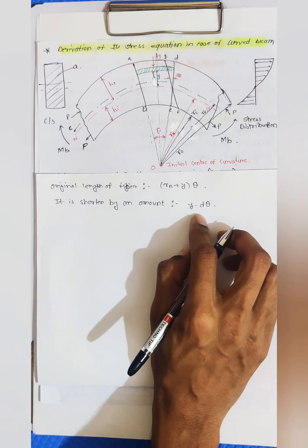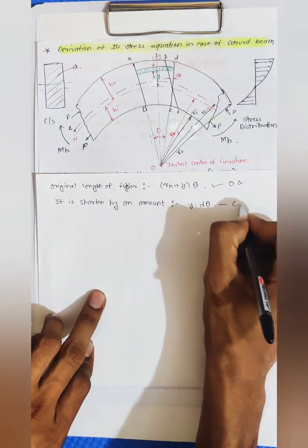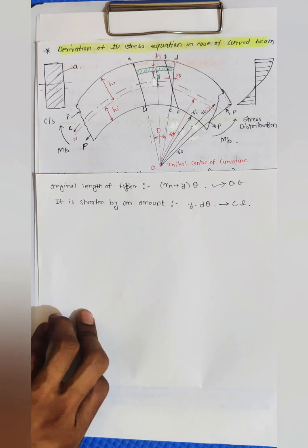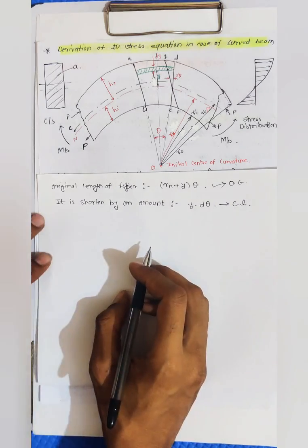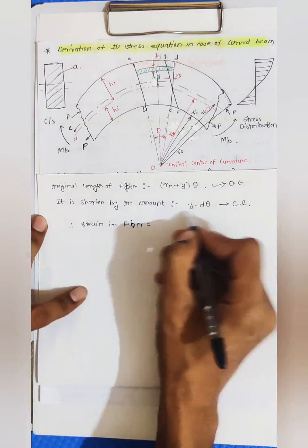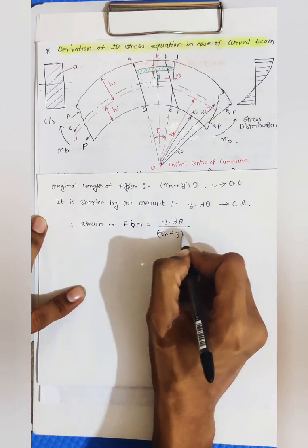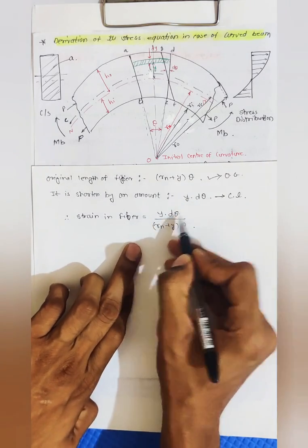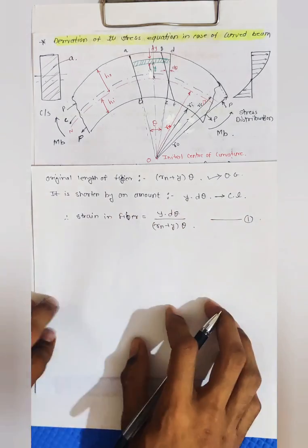This is the change in length. We know the formula for linear strain — that is change in length by original length. So strain in this fiber is equal to y·dθ divided by (rn + y)·θ. This is equation number one.